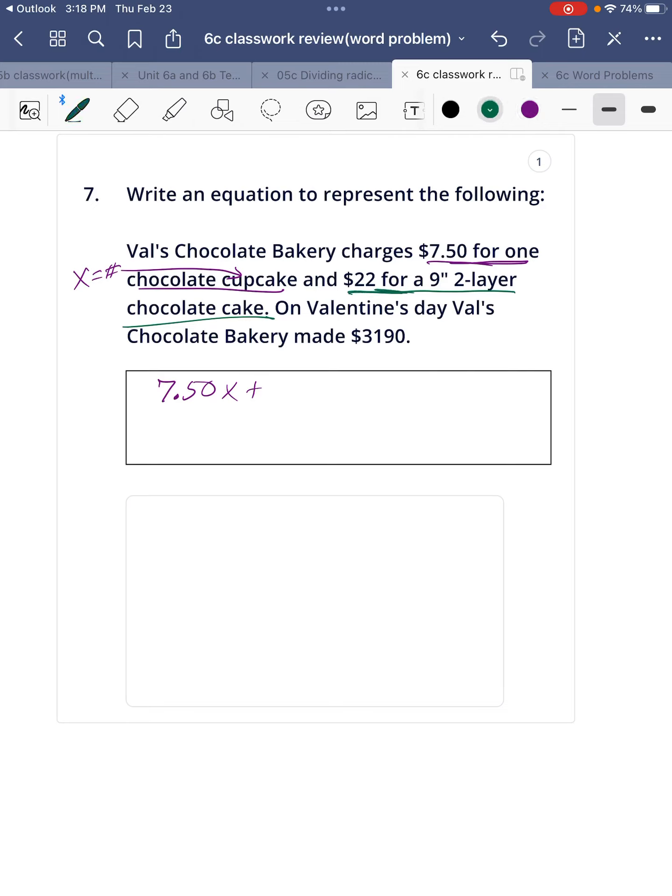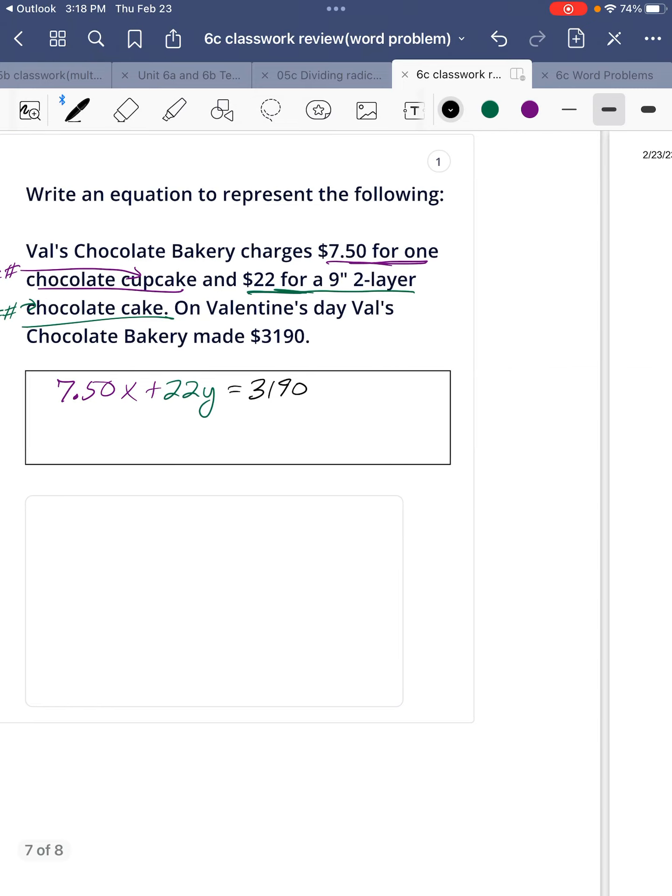And then we'll have the y. $22 for a number of y is the number of cake. So it would be 22 times y. And that's going to equal Val's sold $3,190.